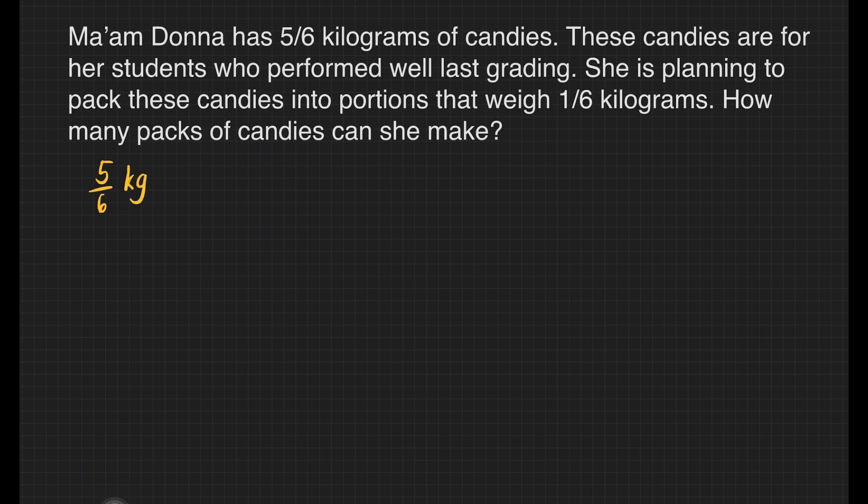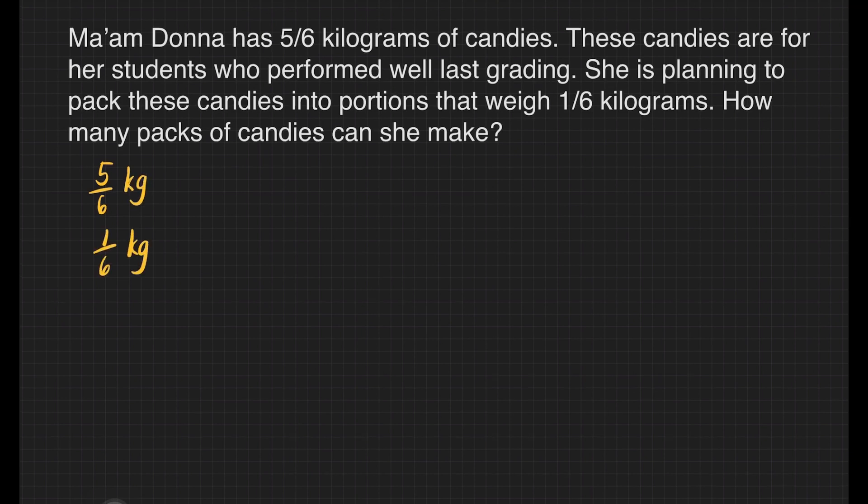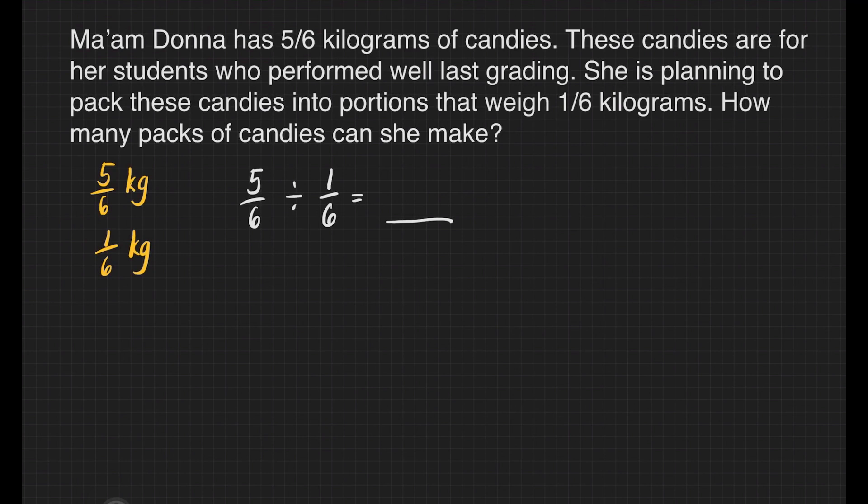Our given are the following: 5/6 kilograms and 1/6 kilogram. Our division sentence is 5/6 divided by 1/6 equals blank. 5/6 is our dividend, 1/6 is our divisor, and the answer is called the quotient.